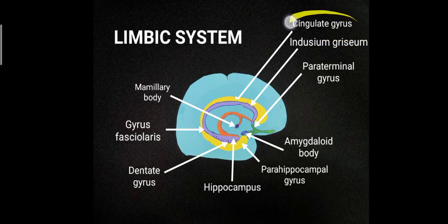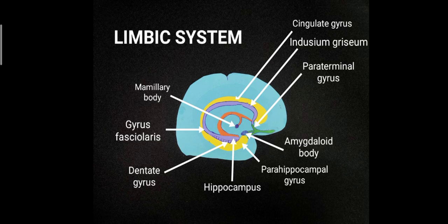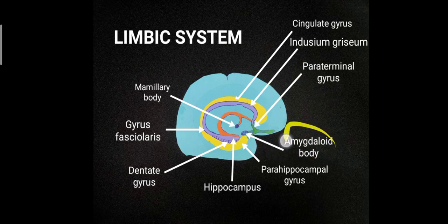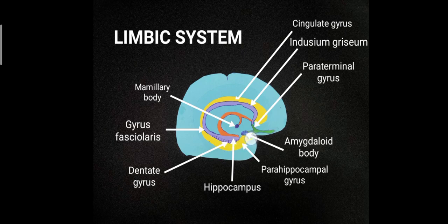In the diagram, we have the cingulate gyrus, which extends between the callosal sulcus and the cingulate sulcus — shown in yellow. The indusium griseum is immediately beneath the cingulate gyrus. Then the paraterminal gyrus, which is a part of the septal area. The amygdaloid body, also known as the amygdaloid nuclear complex or amygdala, the parahippocampal gyrus, the hippocampus, the dentate gyrus — which has a toothed appearance — and the gyrus fasciolaris.